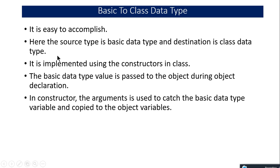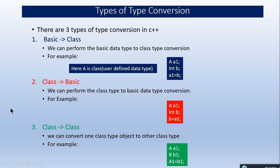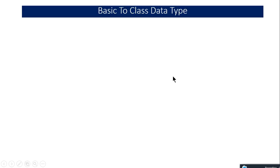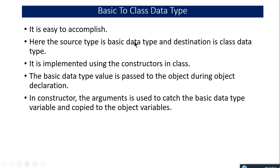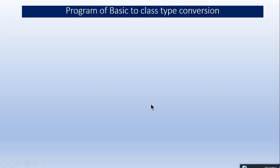The first type, basic to class data type, is the easiest among the three. The source type is basic and the destination is a class. When I write a1 equals b, the basic data type source is passed to the destination which is the class data type. To perform this typecasting, we have to create a constructor in the class. The object passes the basic data type during declaration, and through arguments the data is passed to the constructor. Let's understand this with a program.